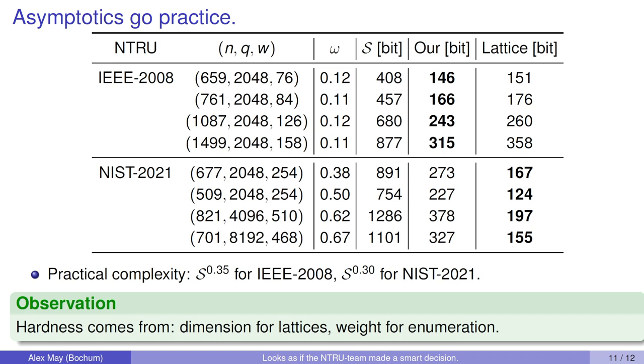If you go to the NIST parameter sets, our algorithm is very sensitive to the weight. For instance, if you compare the first parameters of IEEE and NIST, they are almost the same dimension. You get for lattices almost the same estimate, but for our algorithm, the estimate is much worse. It almost doubles the bit complexity here. The basic observation is that the hardness comes from different sources. Lattices are very sensitive to the dimension, whereas our enumeration algorithm is very sensitive to the weight.